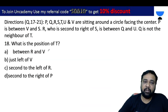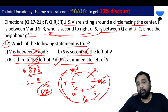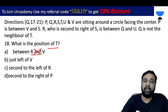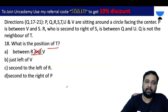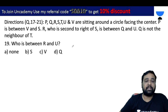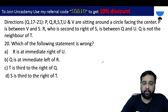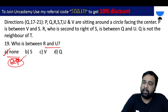Problem 18: What is the position of T? T is between R and V — no, T is between U and V, not R and V. Just left of V: T is just to the left of V — correct. Our answer is B, second option only. Problem 19: Who is between R and U? R and U have no one between them — between R and U is none. Answer is A.